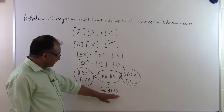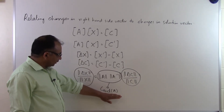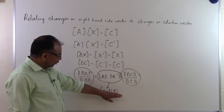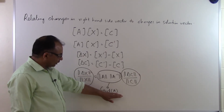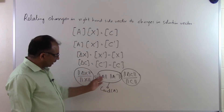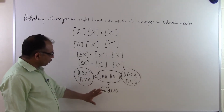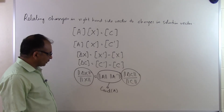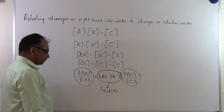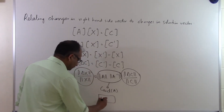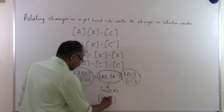What you also have to realize is that the ill conditioning and well conditioning of the system of equations depends only on the coefficient matrix and not on the right hand side vector, as can be seen by this particular theorem. We are not proving this theorem at this stage — we are just showing what this theorem is all about. And this is the end of this segment.